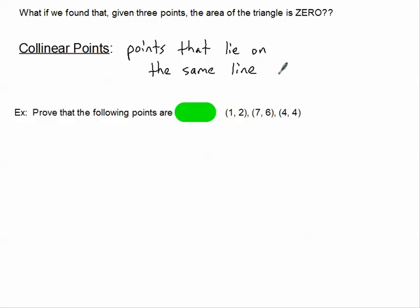Since they're lying on the same line, they would not actually make a triangle. So therefore, the area of the non-triangle is zero.